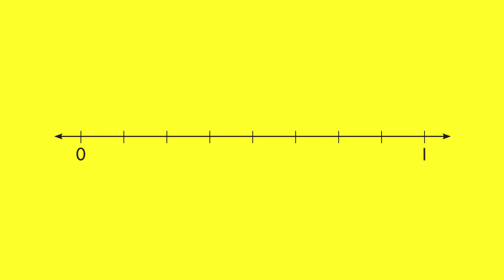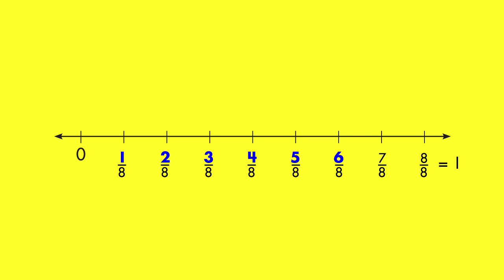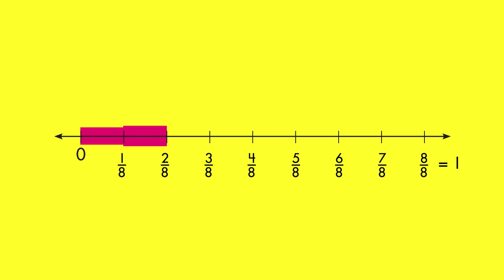As you count more parts of the whole, the numerators of the fractions get larger. The denominator stays the same because it tells how many parts are in the whole. The fraction three-eighths names three parts of the whole.